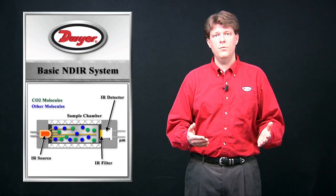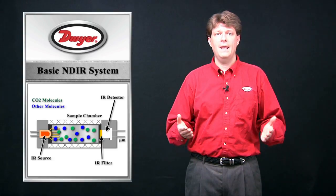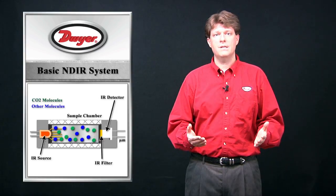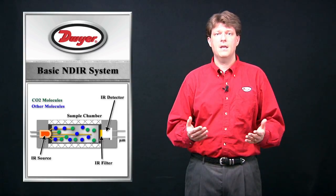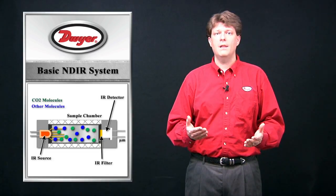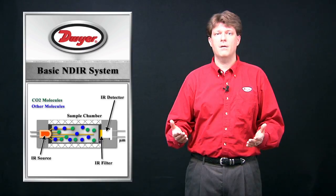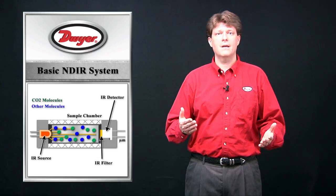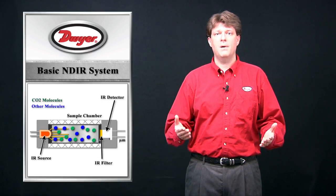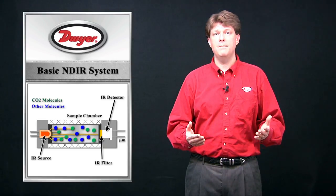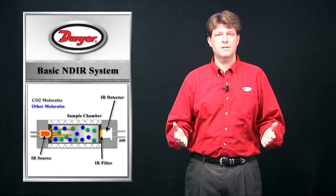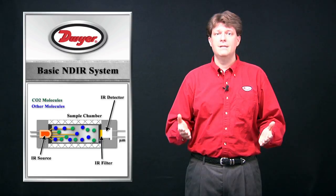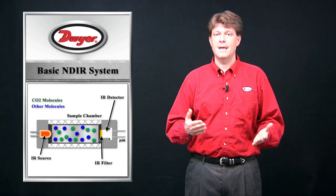For carbon dioxide sensing, room or duct air is allowed to flow in and out of the sample chamber. Infrared light waves are created by the source and sent through the sample chamber to the detector. As the infrared light passes through the air in the chamber, light of a particular wavelength will be absorbed by the carbon dioxide molecules. Infrared light that makes it through the chamber and filter in the carbon dioxide absorption wavelength is then sensed by the detector. The difference between the light emitted by the source and the light sensed by the detector for the carbon dioxide infrared wavelength is used to calculate the gas concentration, since the amount of light absorbed is directly proportional to the gas concentration.